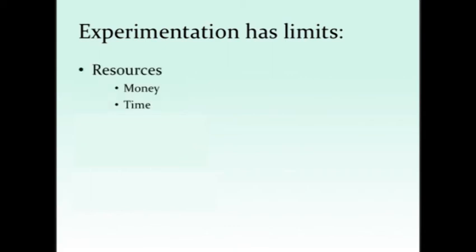But we have to say that experimentation has limits — there's a reason we don't experiment on everything. One of the most obvious limits is resources: we simply don't have the time or the money to experiment on everything. The other limit is ethics. We would really like to know whether one child-rearing practice is better than another, but it's simply not ethical to force people to raise their children in a particular way and then test what happens. Similarly in epidemiology, researchers never infect people with diseases to see what happens — at least not anymore. They simply observe and look at patterns, because actually infecting people would be unethical.